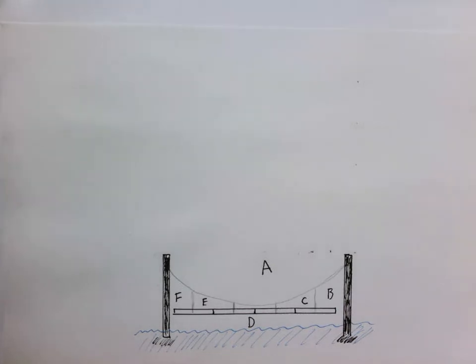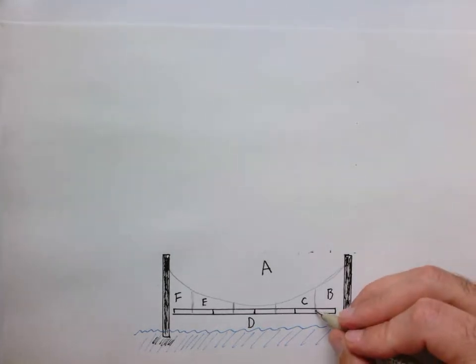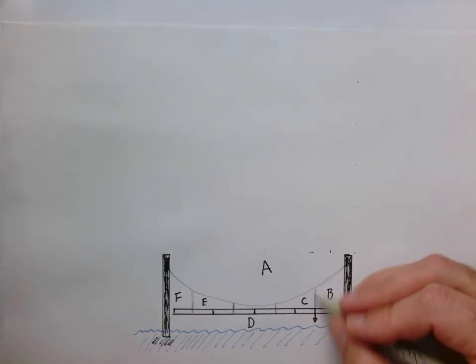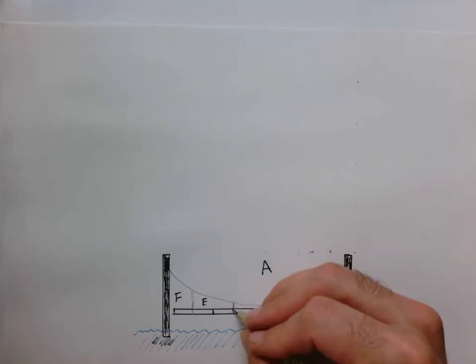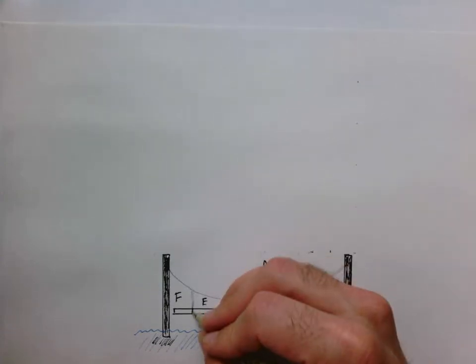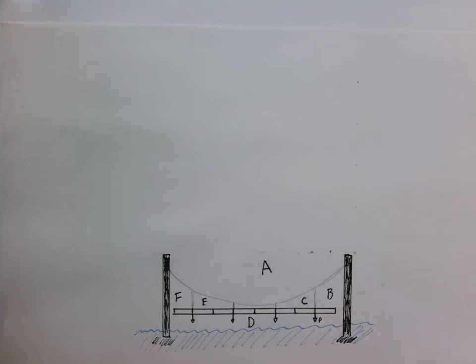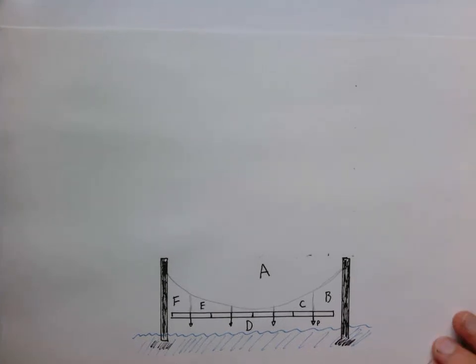And now we know that we need to draw our load lines because what I'm going to imagine here is that this deck, this section is all being held up by this cable. So I have my load P, P, load P, and load P. And since the decks equal size, the loads are going to always be the same.